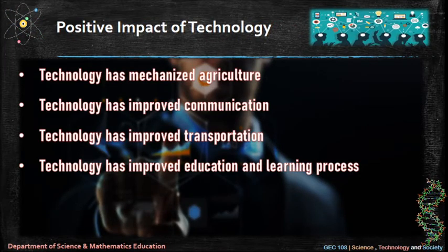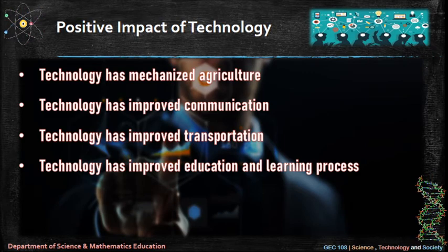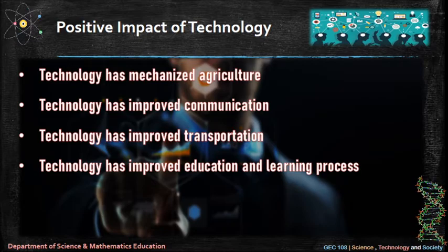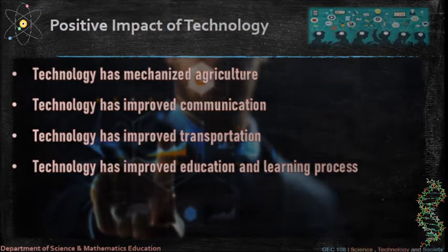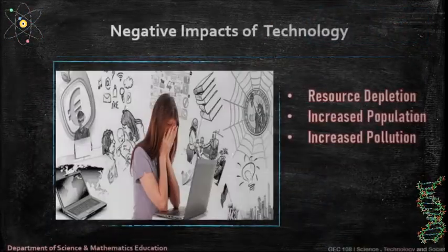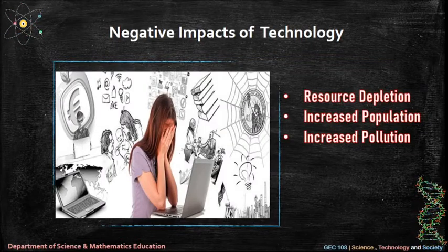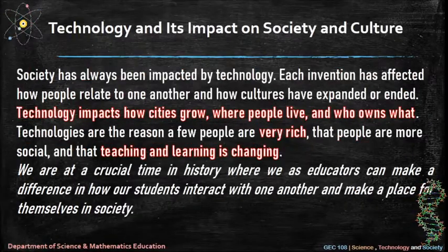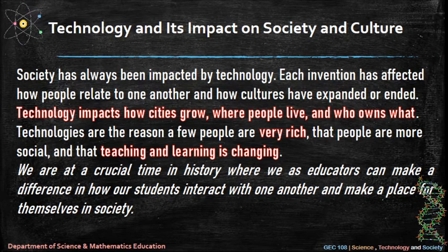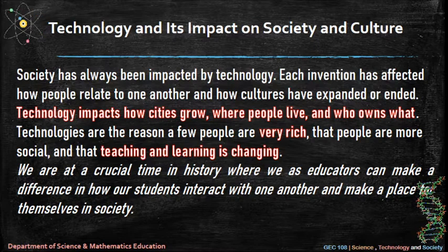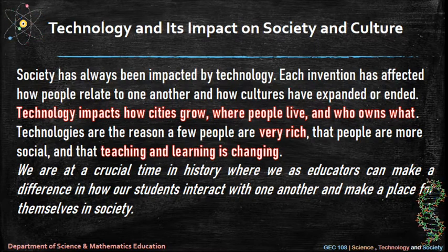Positive impacts of technology: technology has mechanized agriculture, improved communication, improved transportation, and improved the education and learning process. Negative impacts include resource depletion, increased population, and increased pollution. Society has always been impacted by technology — each invention has affected how people relate to one another and how cultures have expanded or ended.